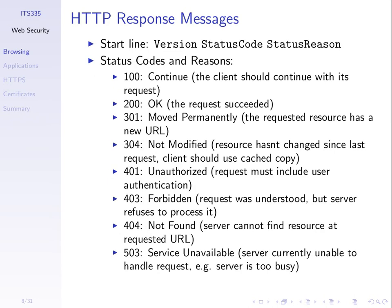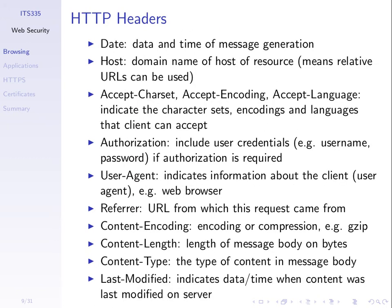Response messages also have a start line with three values: the version, a status code, and a status reason. The status code and reason go together — for example, 200 OK means your request was successful, or 404 Not Found means the resource you requested is not available. There are many other status codes. Optional headers may be included in requests and responses, such as date, character sets accepted, authorization with username and password, the type of browser, content type, and content length.